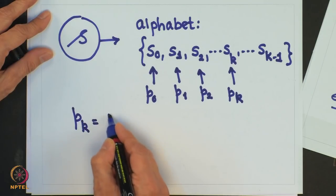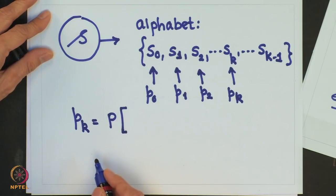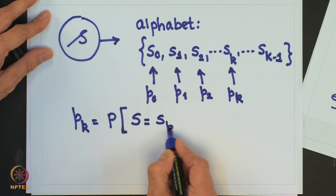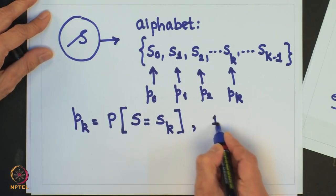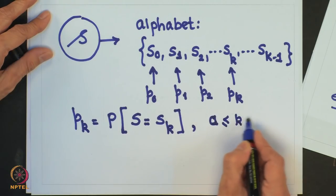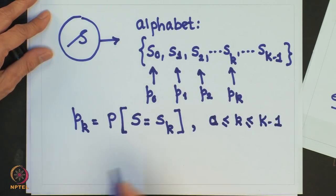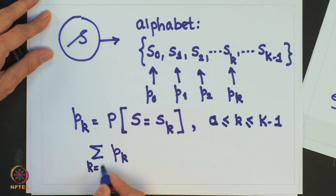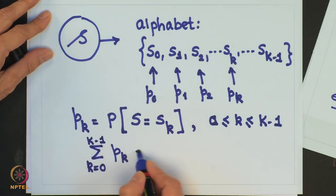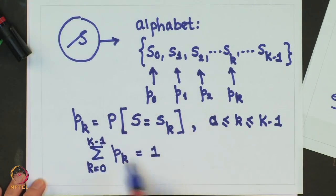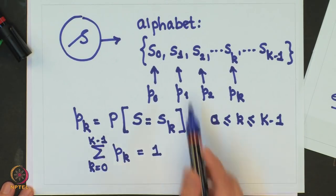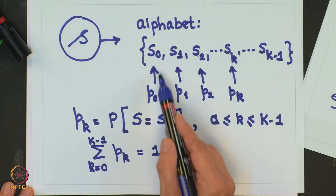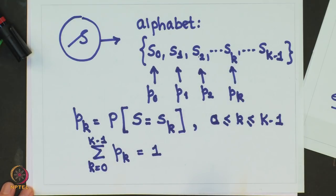P_k is defined as the probability that the output of the source equals S_k, for k equal to 0 to K minus 1. Obviously, the summation of P_k over all K must equal 1. So a finite discrete source is defined by the list of symbols or letters — known as the alphabet — and the probabilities assigned to those symbols or letters.